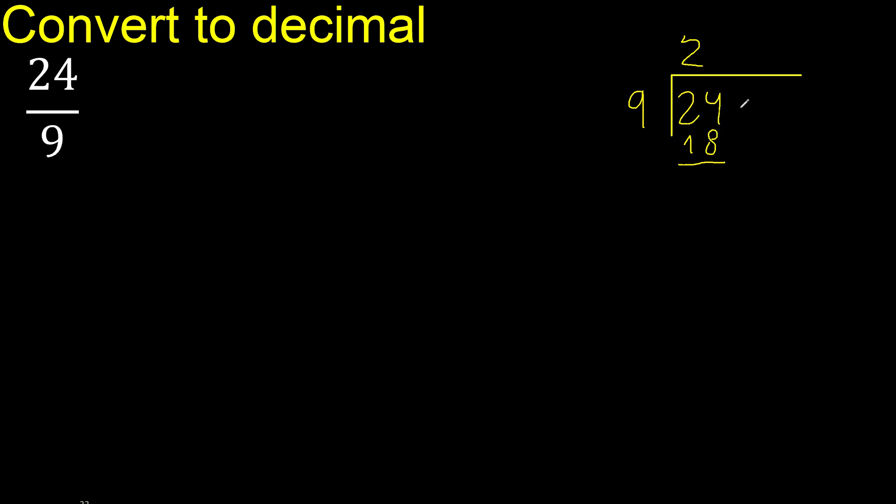Subtract. 24 minus 18 is 6. Next, there is no number, therefore complete. Always complete with 0 here with point. 0 point. 60.